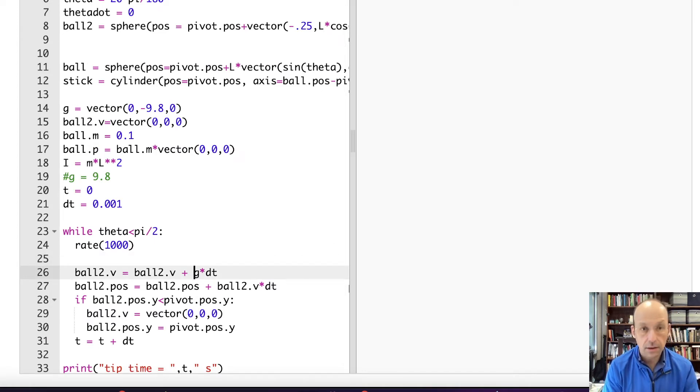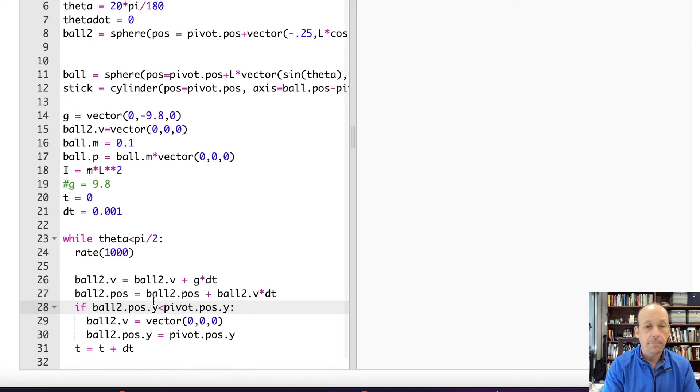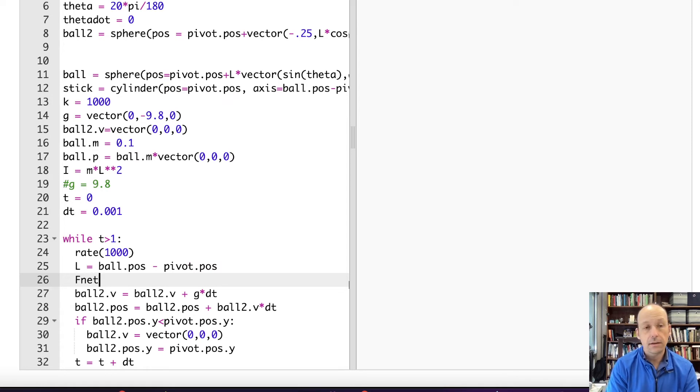While T is greater than one. Let's just run it for one second, then we can change that. I need K. K equals 1,000. So the first thing I need to do is define that vector from the pivot point to the ball. And I'm going to call that L. L equals ball.pos minus pivot.pos. Now I can go ahead and calculate the total force. F_net equals negative K times the magnitude of L minus L0, which I never put in here. Times norm L. So norm L is the unit vector in the direction of L. I need to call that L0.